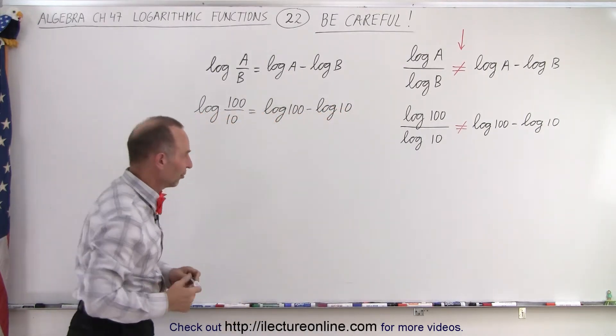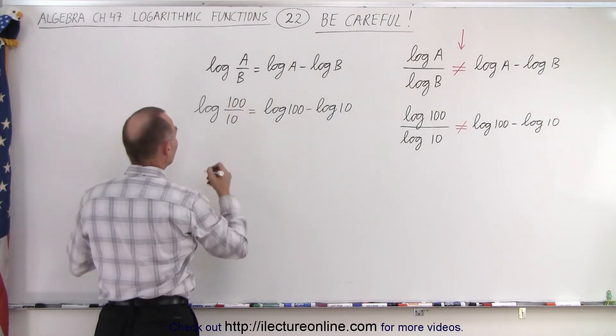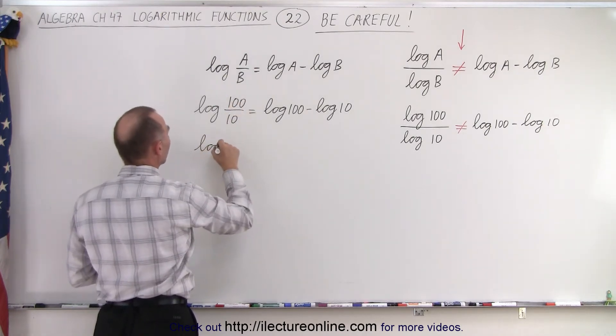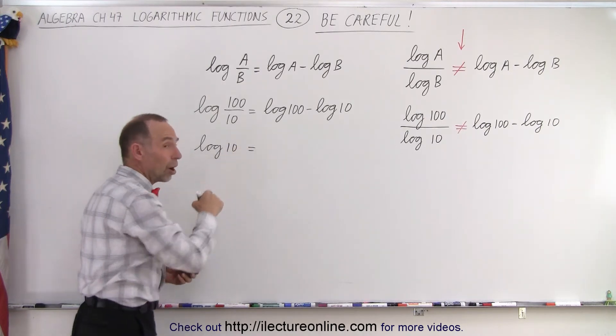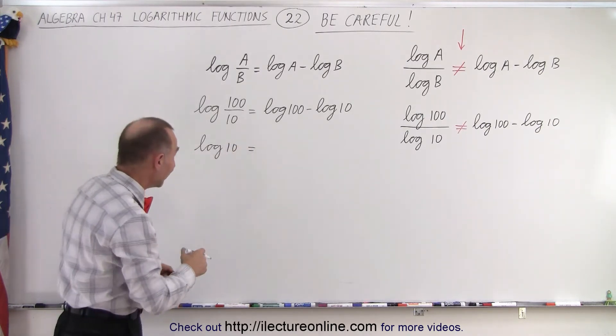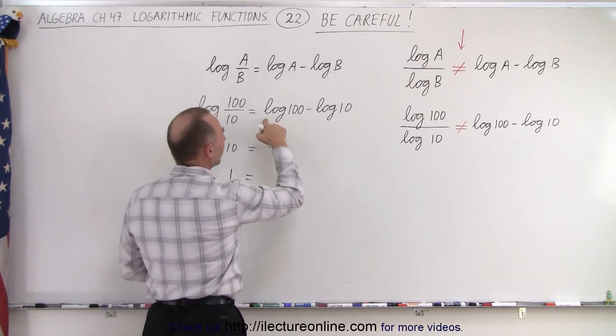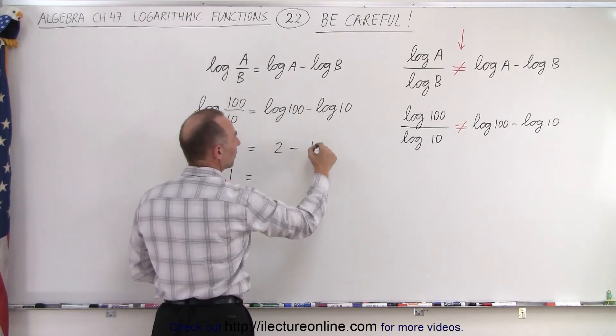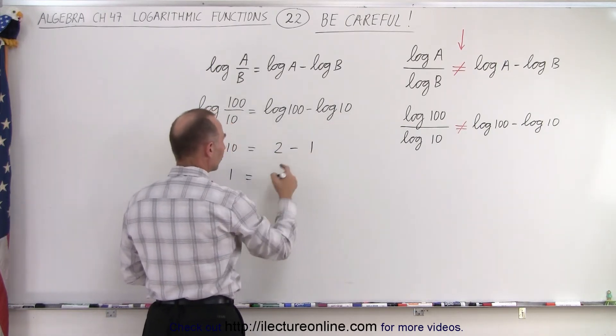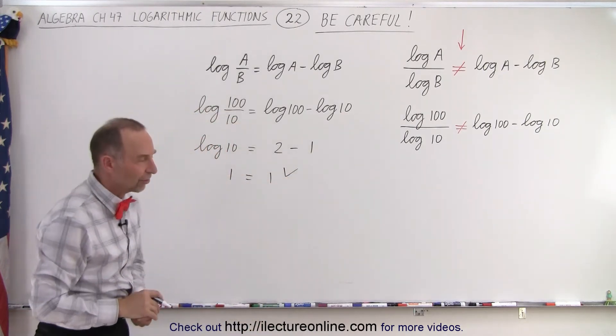So let's do the left side first. Well first of all on the left side we can divide 100 by 10 so this on the left side becomes the log of 10 and of course the log of 10 since the log is the common log base 10 that would then equal 1. Here we notice that the log of 100 is equal to 2 because we have two zeros minus the log of 10 which is 1 because there's one zero and 2 minus 1 is 1 so 1 equals 1. You can see that's clearly the same.